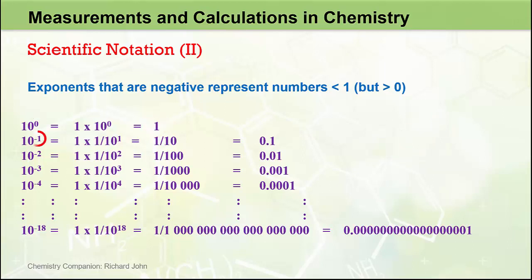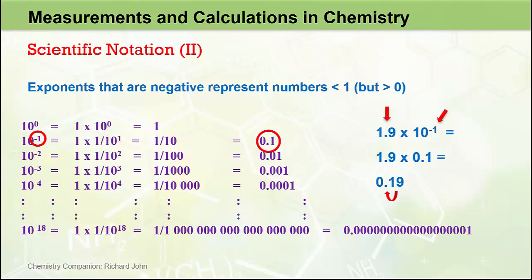10 to the minus 1, however, represents 1 over 10 to the 1, which is 1 over 10, or one tenth, or 0.1 in decimal form. So 1.9 times 10 to the minus 1 actually represents 1.9 times 0.1, which equals 0.19. In this case, the position of the decimal place in the coefficient has moved to the left by one place, corresponding to the exponent of negative 1. The negative value of the exponent tells us to move the decimal place to the left, and the magnitude of 1 tells us how many places to move it.